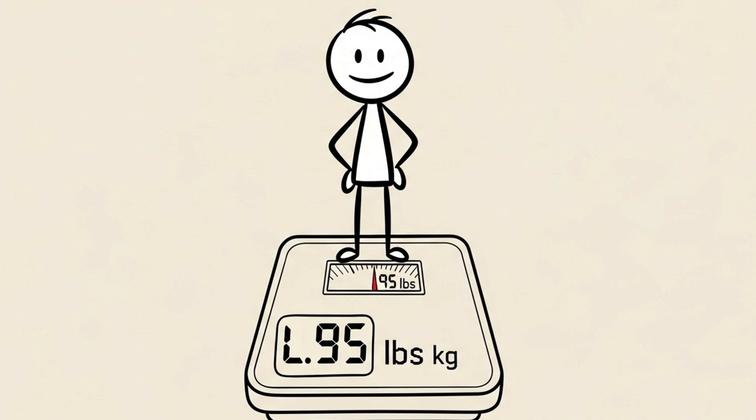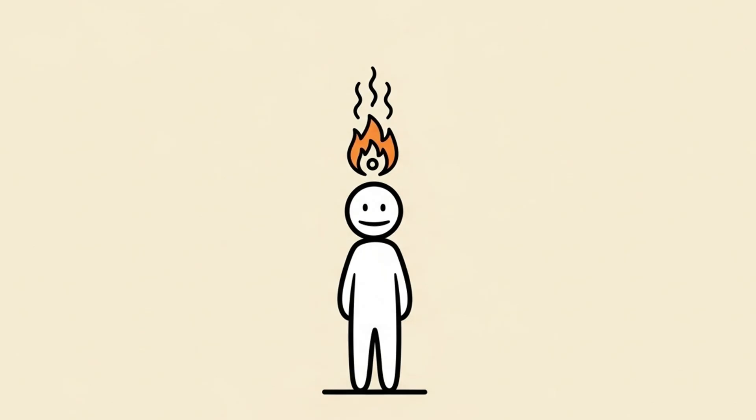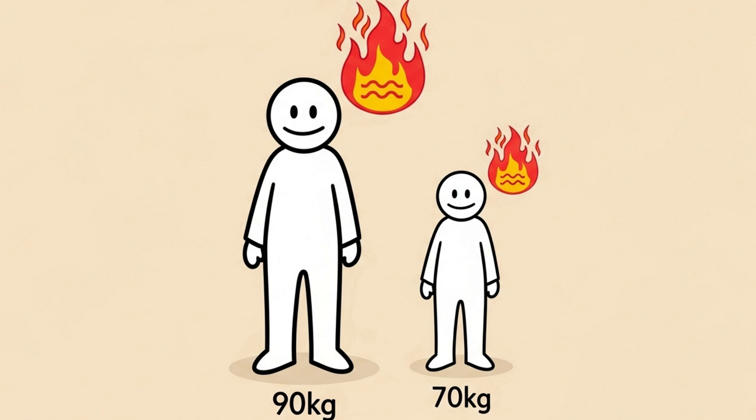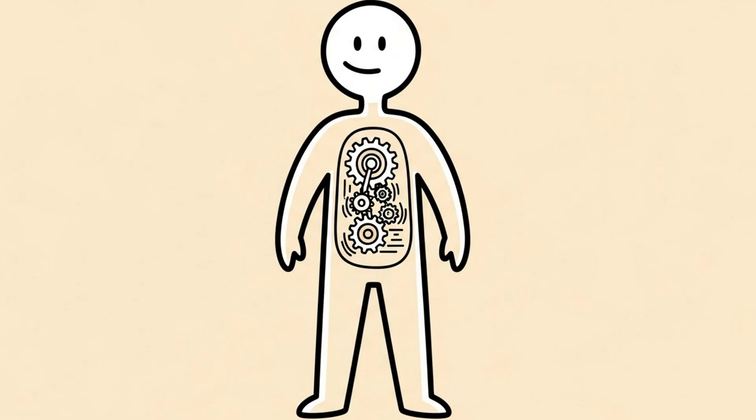One, you weigh less. A lighter body burns fewer calories. A 90-kilogram person burns more calories just existing than a 70-kilogram person. Your metabolism slows down simply because there's less of you to maintain.